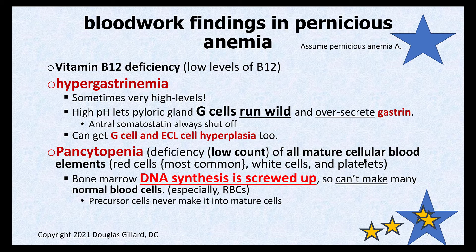We started talking about pernicious anemia last time. There are several different causes, but it basically means that B12 is not being reabsorbed by the body. We need vitamin B12 to do two important things: DNA synthesis of all blood cells (especially red blood cells), and to make myelin, which is the covering around your nerves. For board purposes, if you see pernicious anemia, assume they're talking about Type A — the autoimmune attack against parietal cells — unless stated otherwise.